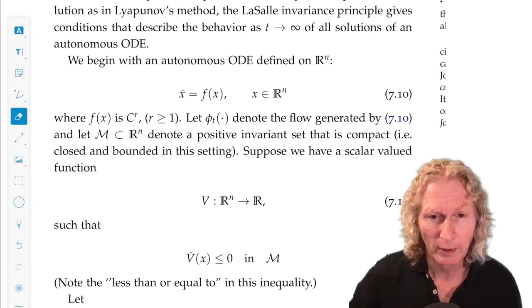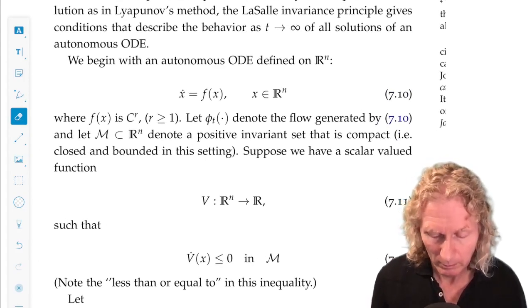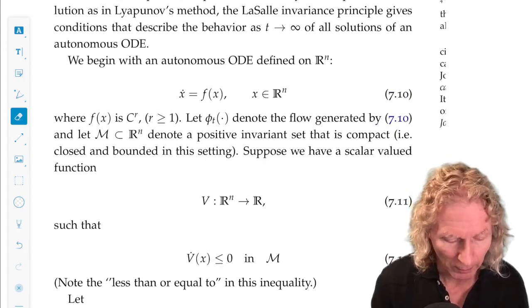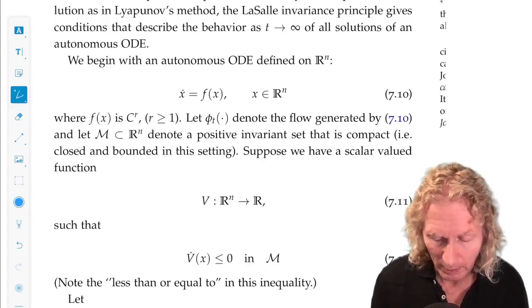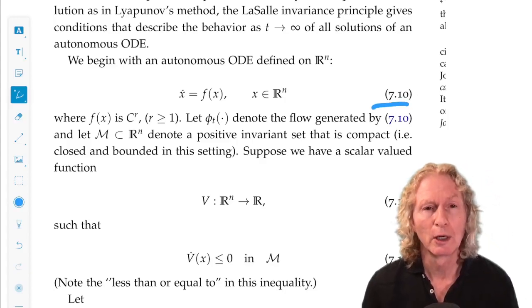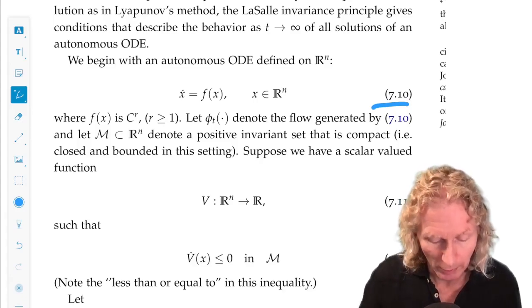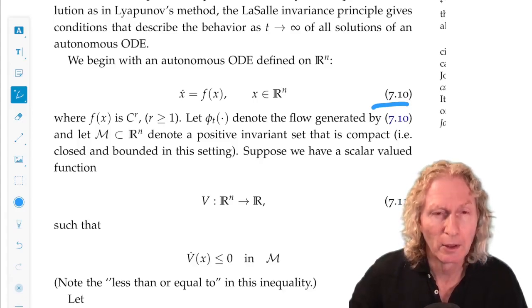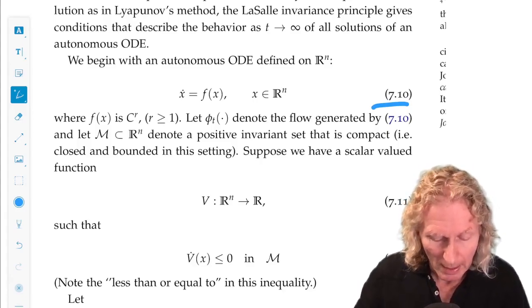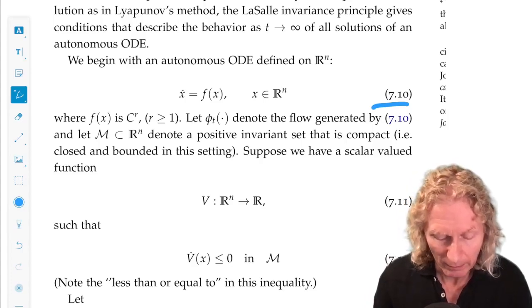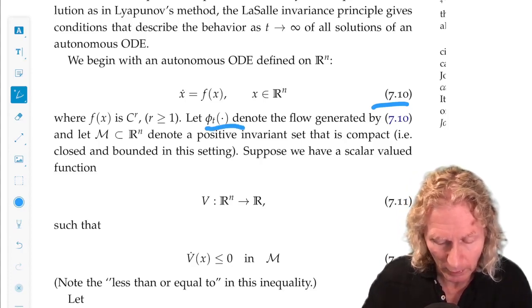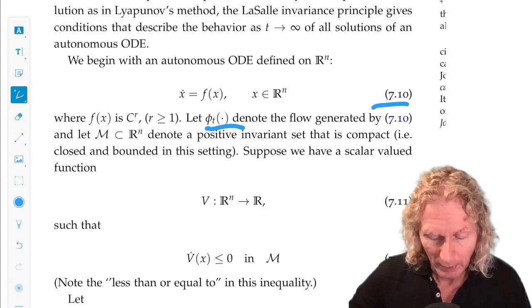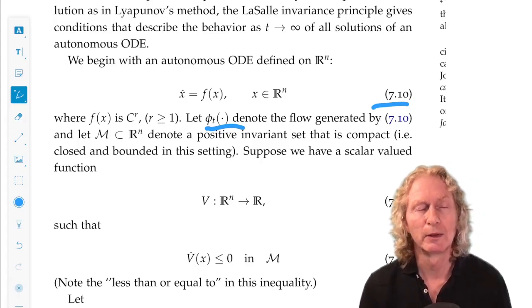The initial setup is the same. We have an n-dimensional autonomous ODE on R^n. We assume it's C^r, r ≥ 1. We're going to let phi_t denote the flow generated by this ODE.